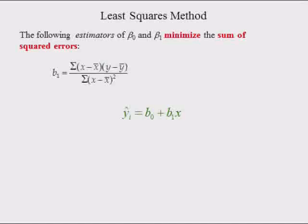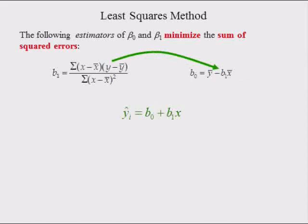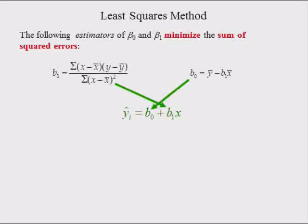Slope b1 equals the sum of the products of deviations from x and y's means, divided by the sum of squared deviations from x's mean. This is the estimator of the true slope parameter beta 1. Intercept b0 equals the mean of y minus b1 times the mean of x. This is the estimator of the true intercept parameter beta 0. Intercept b0 cannot be computed until slope b1 is computed. The values of b0 and b1 can then be used to compute the predicted value of y for each value of x in the data set.